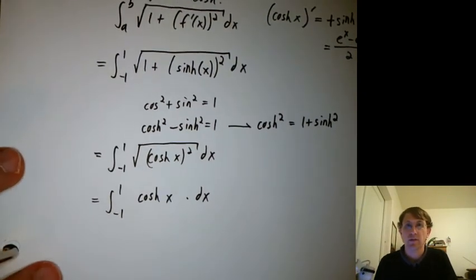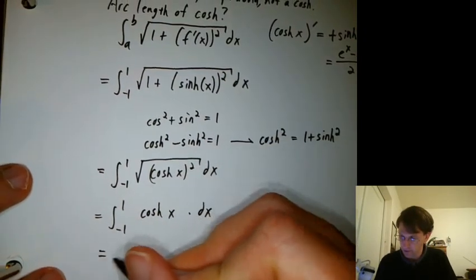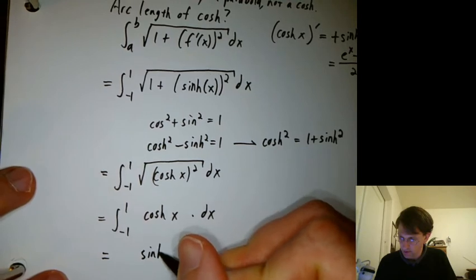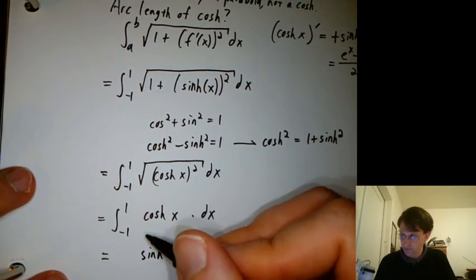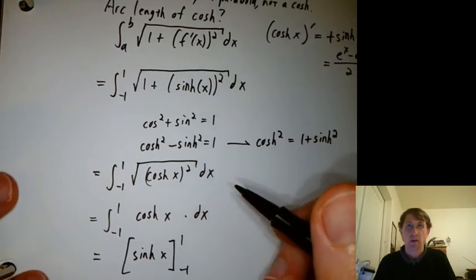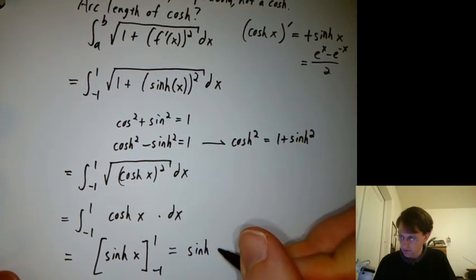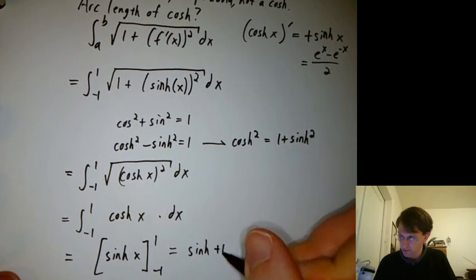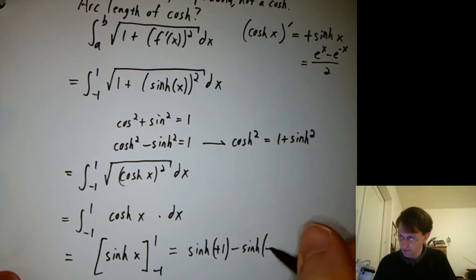Now, what would you guess the integral of cosh is? Sinh. That's a sinh. So you get sinh x from negative 1 to 1. And that's sinh of positive 1 minus sinh negative 1.